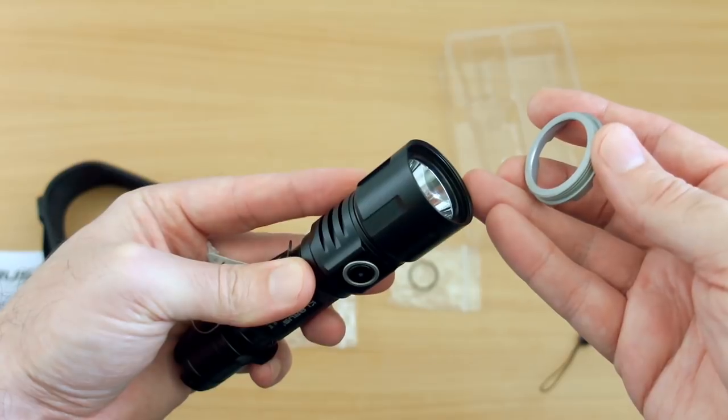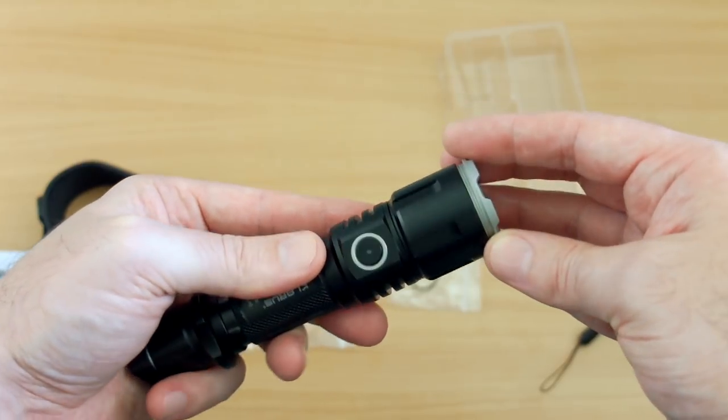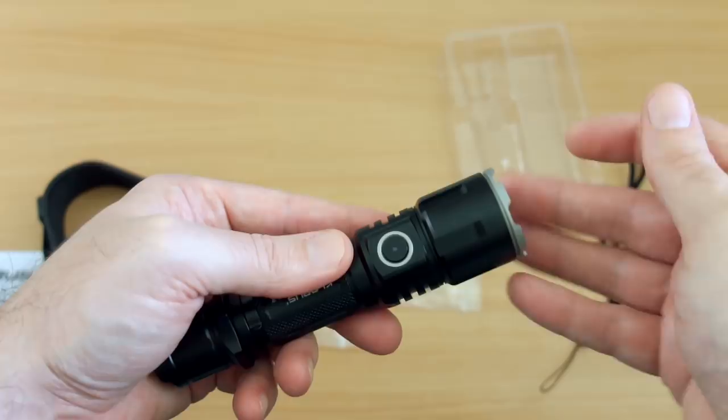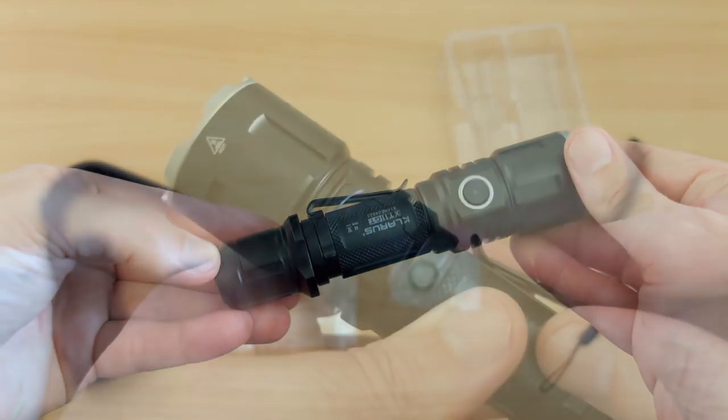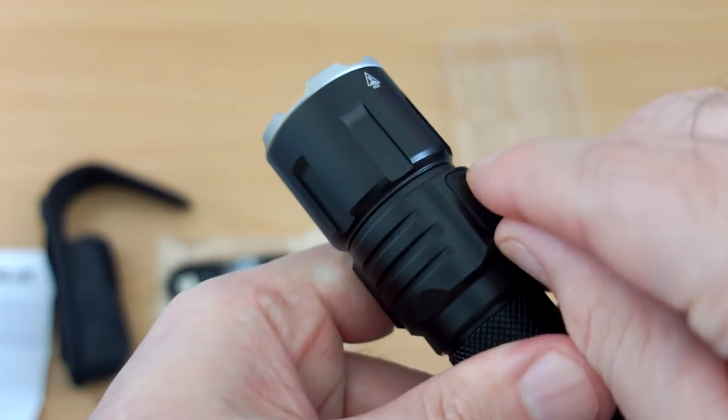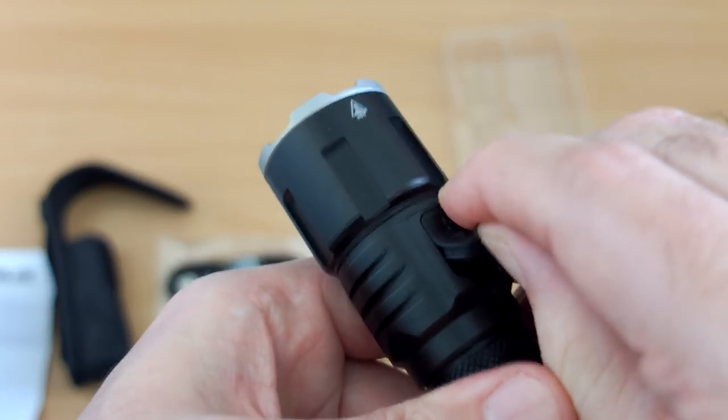So that unscrews there. You can also get some other extras which we'll show you shortly. This is the cover for the micro USB charging port, so you don't need an extra charger with this. You can charge it in the torch.